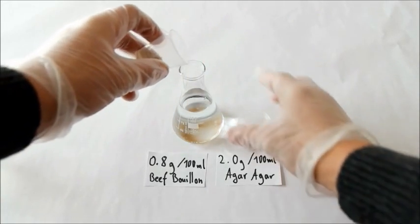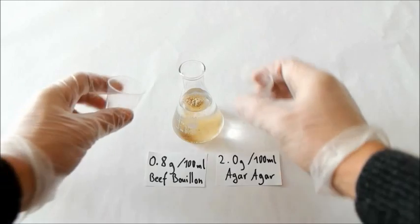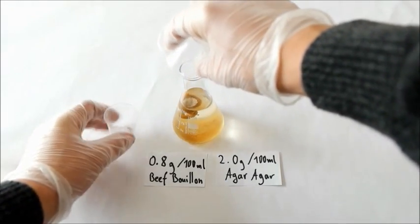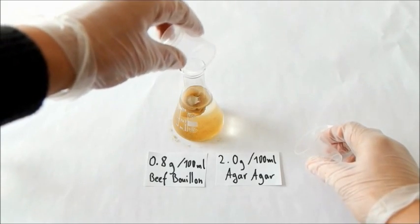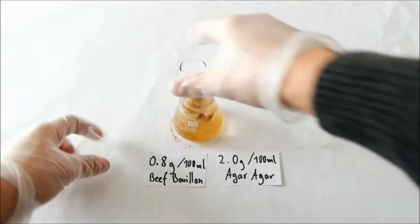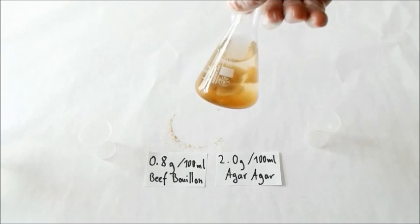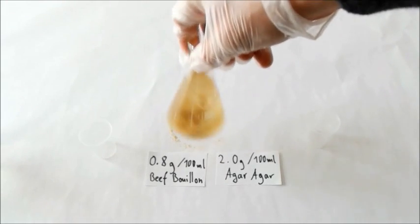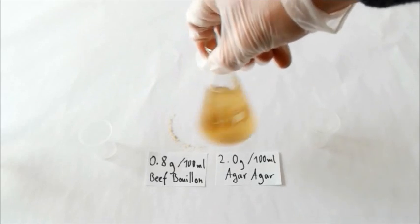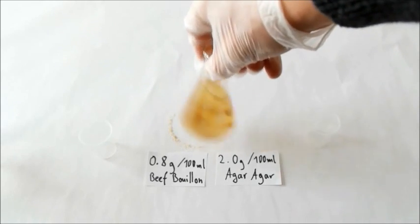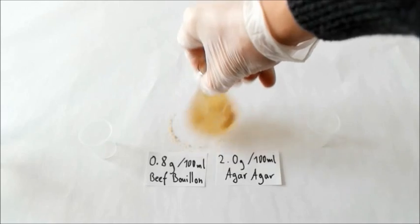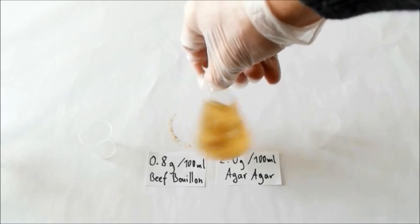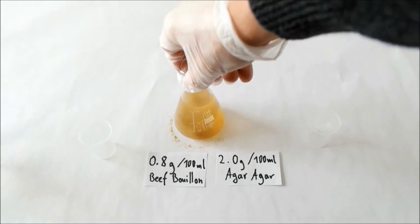So now put your two ingredients in your Erlenmeyer flask and then shake it. Shake it to let it dissolve. If there are little things which don't dissolve this is no problem because later on when we are cooking it they will dissolve automatically. So you can just let it like this and go on with the next step.